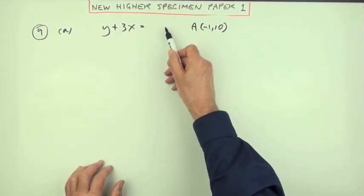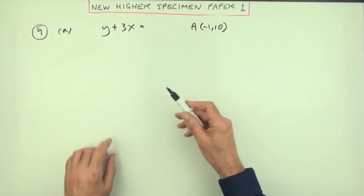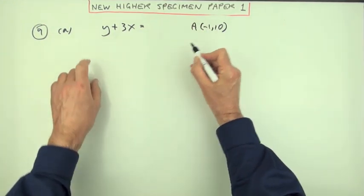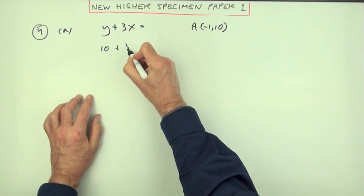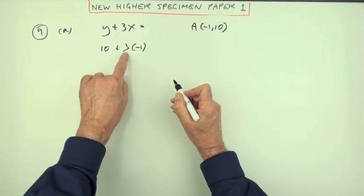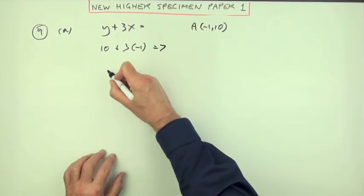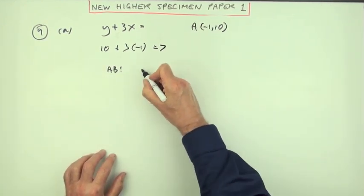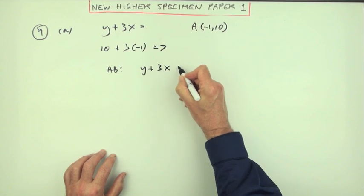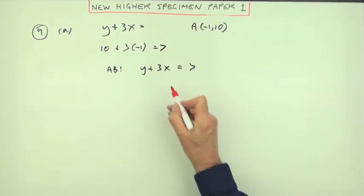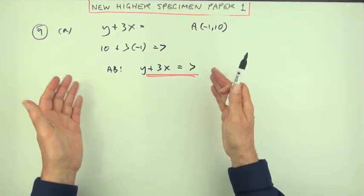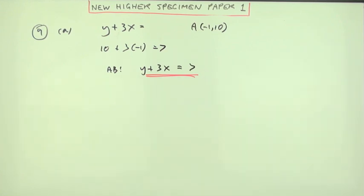So if you want the particular line with this slope that goes through these points, just find what number these points should come to by putting those numbers in. So y is 10, x is -1. 10 and -3 comes to 7, which means the line AB is y plus 3x equals 7. It really is as simple as that.